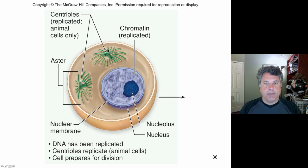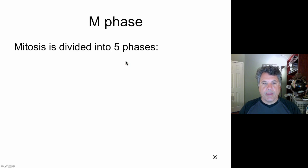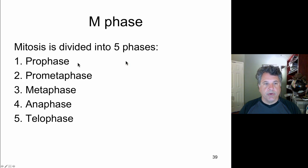At that point, replicated centrioles are moving to opposite sides of the cell, defining two poles. The chromatin has already been replicated but chromosomes are not yet visible — they will begin to condense rapidly at prophase. There is an intact nuclear membrane and the cell is ready for mitosis. There are five stages: prophase, prometaphase, metaphase, anaphase, and telophase.